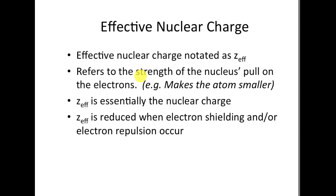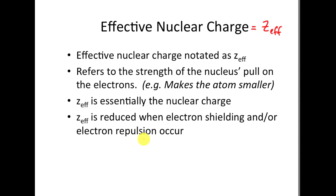Effective nuclear charge — I'll use the notation ZEFF. If you use this on the AP test, make sure you define it as ZEFF first. The higher the effective nuclear charge, the more it pulls on the electrons, making the atom smaller. If ZEFF is getting stronger and stronger, it's going to pull those electrons more, making the atom smaller. As a result, ionization energy goes up, electronegativity goes up, and electron affinity goes up. We have to look at how ZEFF changes when I add shielding and repulsion, because those two forces counteract the effective nuclear charge.